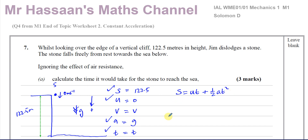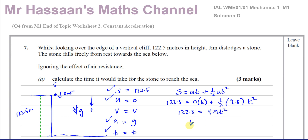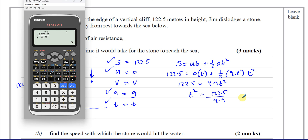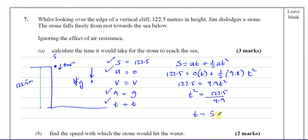The thing we have to find is time and everything else we know. So: 122.5 = 0 × T + ½ × 9.8 × T². This simplifies to 122.5 = 4.9T². So T² = 122.5 ÷ 4.9, giving T = √(122.5/4.9) = 5. So T equals 5 seconds. That's the answer to part A.